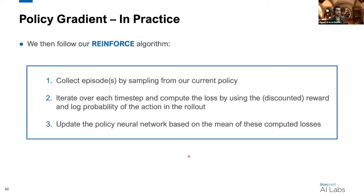To quickly summarize the last three slides, this is what it's going to look like when we actually train our policy gradient algorithm. We collect episodes by sampling from our current policy. We iterate over each time step and compute the loss using the reward and log probabilities of the actions in the rollout. Finally, we update the policy neural network based on the mean of these computed losses. Once again, it's often beneficial to batch multiple time steps or episodes together and take the mean across their losses to reduce the variance in the model updates.